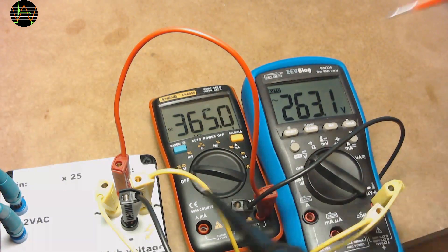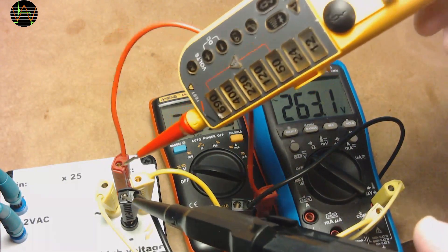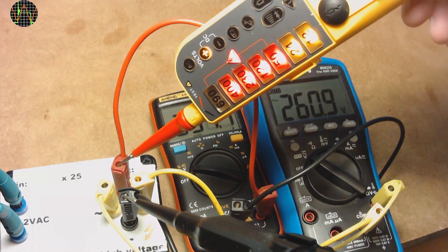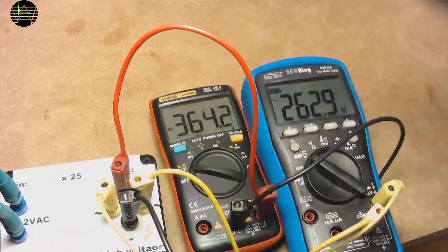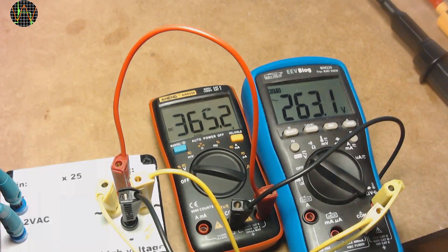At 365 volts DC, we now get the 400 volt light and for 263 volts AC, it shows now the 230 volt indicator.